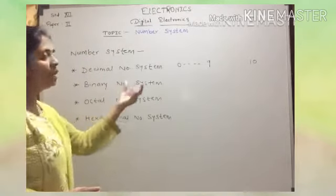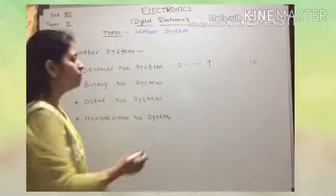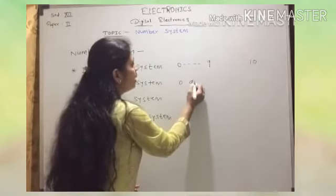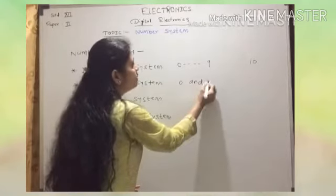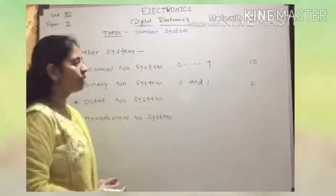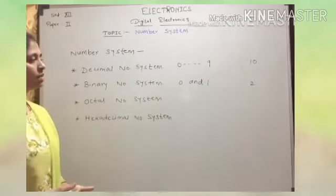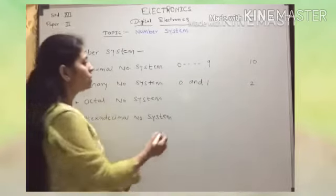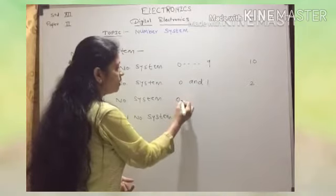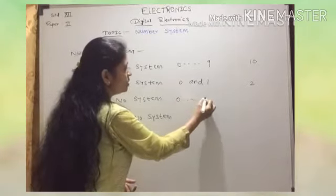In the binary number system, we are using only two symbols — that is 0 and 1 — so the radix of the number system is 2. In the octal number system, we are using 0 to 7 numbers.